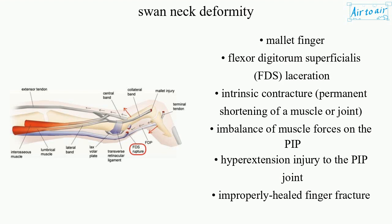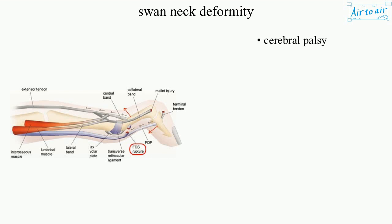Additional causes include: mallet finger, flexor digitorum superficialis (FDS) laceration, intrinsic contracture (permanent shortening of a muscle or joint), imbalance of muscle forces on the PIP, hyperextension injury to the PIP joint, improperly healed finger fracture, and cerebral palsy.